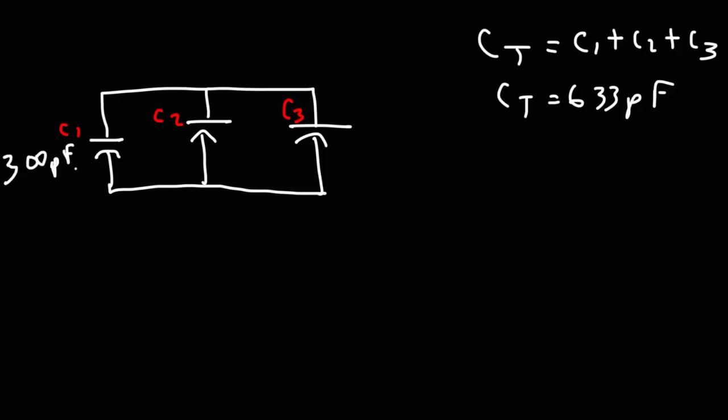So let's assume we have two 300 picofarad capacitors. So that's a total of 600. And we have a 33 picofarad capacitor. So in this case, this will give us the desired capacitance that we want, 633. Sometimes you need to do that in order to get the desired capacitance that you want so that the circuit will oscillate at the desired frequency.